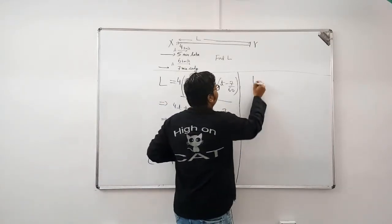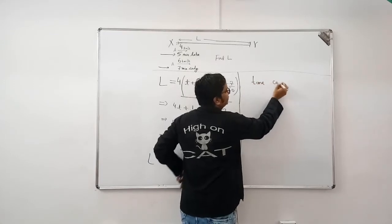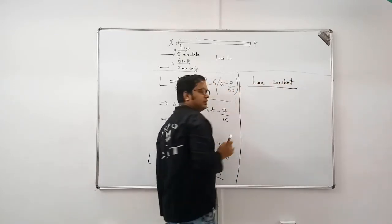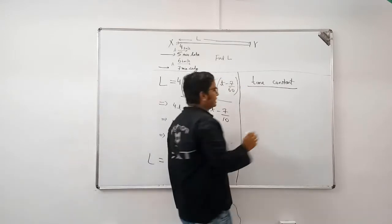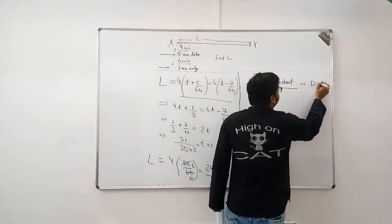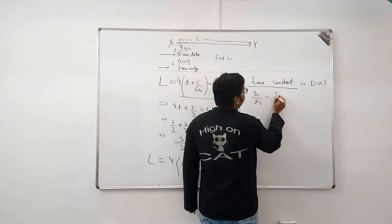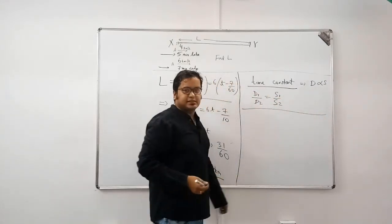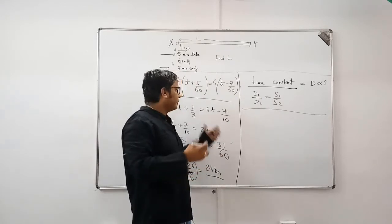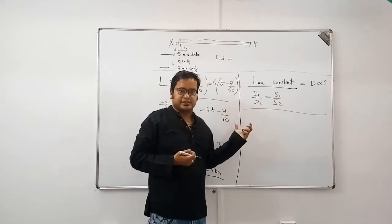Let's make time constant. See, this is a very nice method for solving such questions. If time is constant, distance is proportional to speed. Or, V1 by V2 is equal to S1 by S2. Now, this is the basic THD concept.